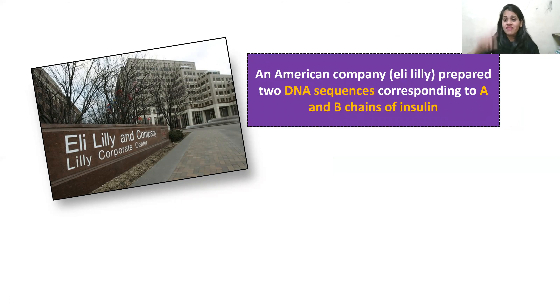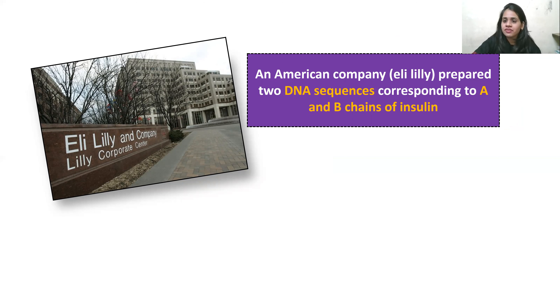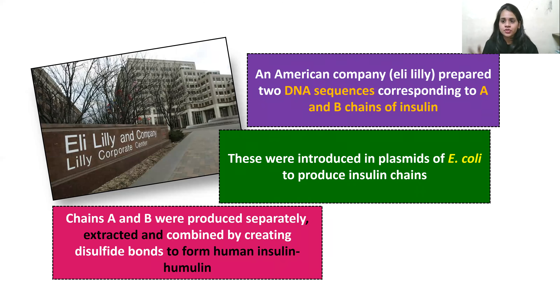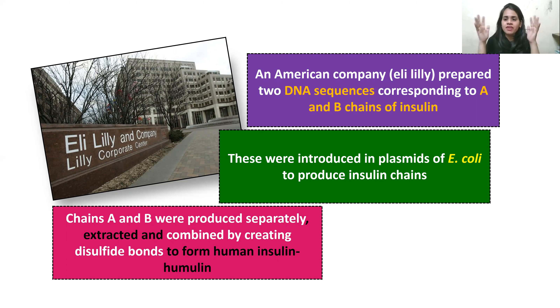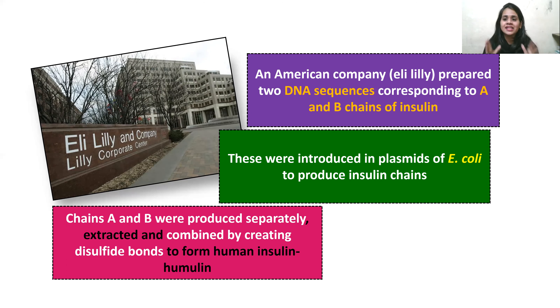Eli Lilly and Company — very important for your exams — is an American company that prepared the DNA sequences corresponding to chains A and B of insulin. These were introduced into plasmids of E. coli to produce insulin chains. Chains A and B were produced separately, then extracted and combined by disulfide bonds. The final human insulin produced was called Humulin — remember the company, Eli Lilly, and the insulin name, Humulin — both are very important MCQ points.